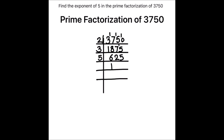Dividing 625 by 5 gives 125. Dividing 125 by 5 gives 25. Dividing 25 by 5 gives 5. And 5 divided by 5 gives 1, so the number is fully divided.